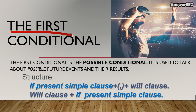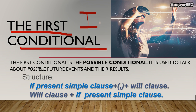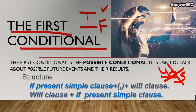This is the first conditional. When we talk about conditions, in Spanish we use the word 'si' — 'si' para condiciones. In English we use the word 'if'. This is 'si', but just for conditions. We don't use 'yes'. We can't use 'yes'. We use 'if'.